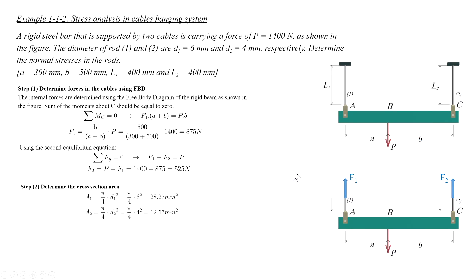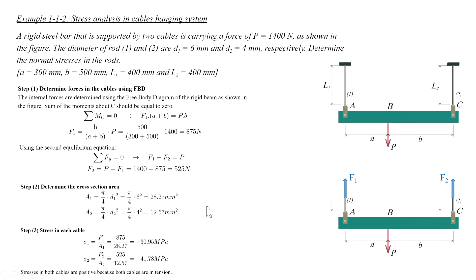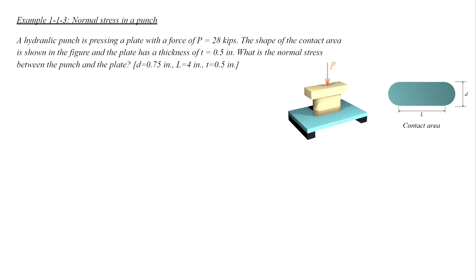The second step is determining the cross-section areas of each cable. The cross-section of a cable is a circle, so the area is pi over 4 times diameter squared, calculated for each of the two cables. The last part is simply dividing force by area to determine stress. In this case, both cables are positive because both are in tension.